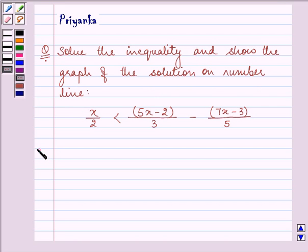Now this is the inequality which we are given. That is x by 2 is less than 5x minus 2 divided by 3 minus 7x minus 3 divided by 5. Now first of all let us multiply each term on both the side by the LCM of 2, 3 and 5 that is 30.